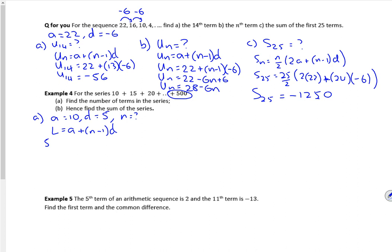So 500, because that's the last term, is going to be 10 plus n minus 1 lots of 5. So if I do a little bit of expanding, I've got 10 and 5n minus 5. If I take it over, it's 495 equals 5n, so I'm going to get 99 for n. There you go.